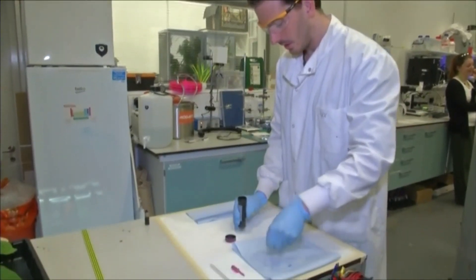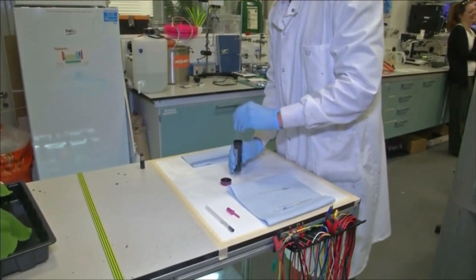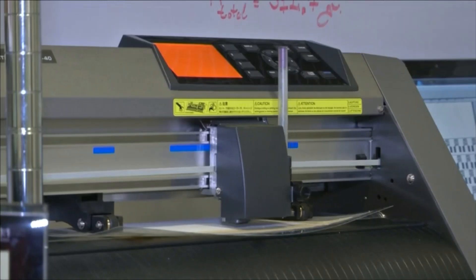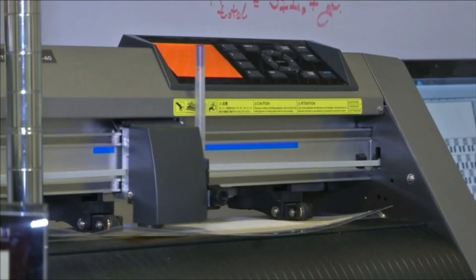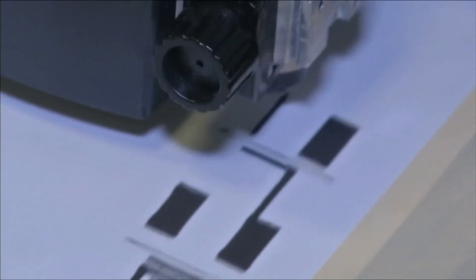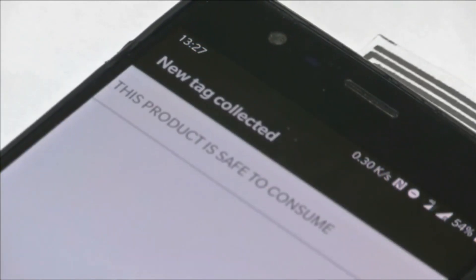The paper-based electrical gas sensors have been developed here at Imperial College London. They're made by printing carbon electrodes onto cellulose paper. They contain what are called near-field communication tags and microchips. That means information on the gases it's detecting can be read by your mobile phone.